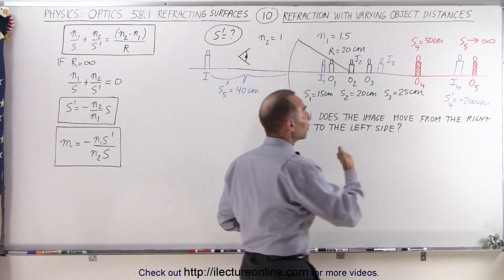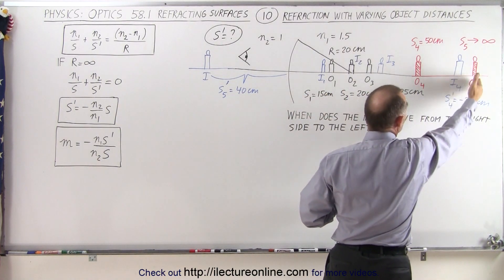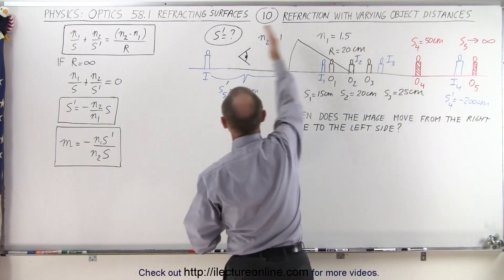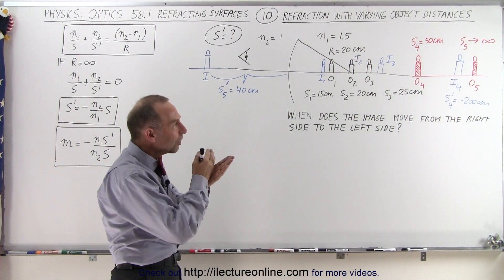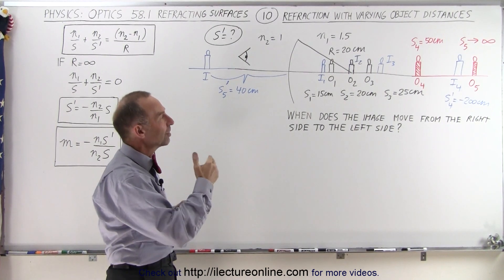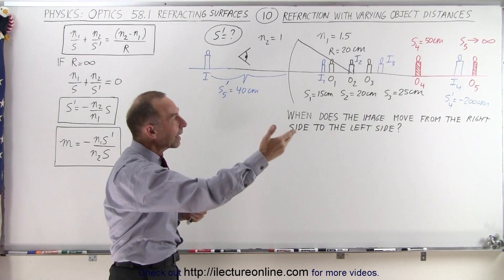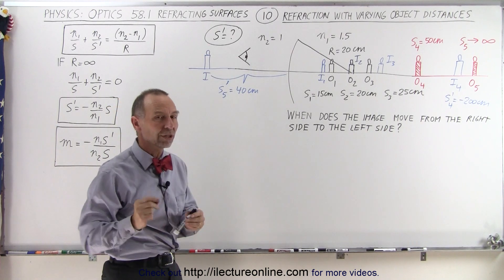But at some point, when we put the object far enough away, when the object goes to infinity, the image appears on the other side. So the question might be, when does that transition occur? At what point does the image reach infinity and beyond that, then the image will move to the other side.